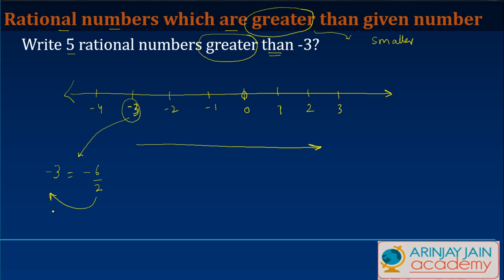Now since I've chosen 2 as a denominator, anything which is greater than -6 in the numerator is going to be greater than -3. So effectively, if the numerator is greater than -6, the fraction will be greater than -3.